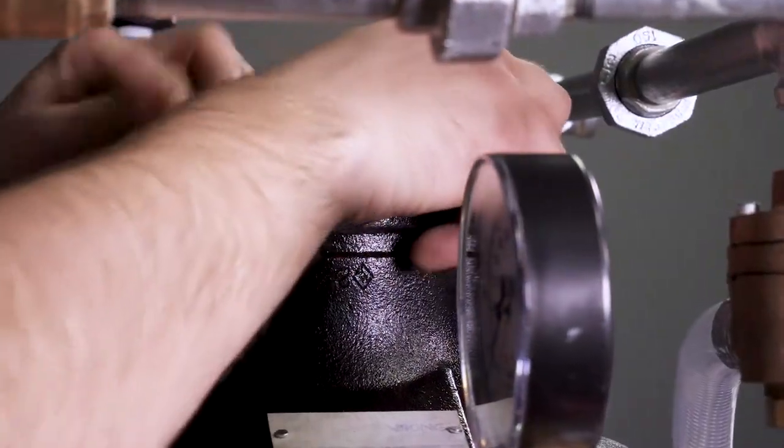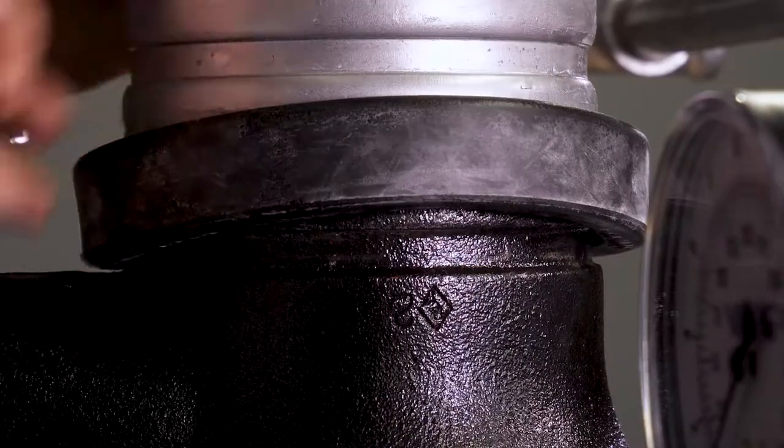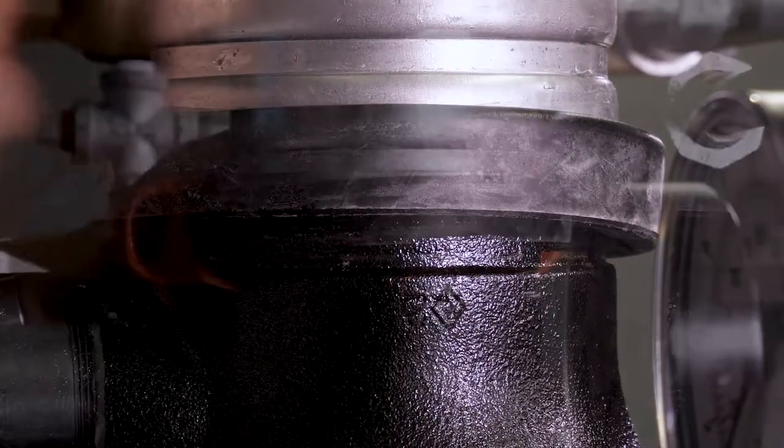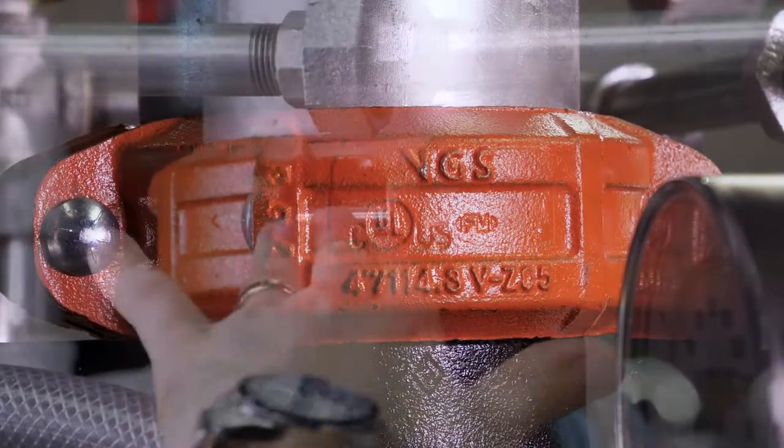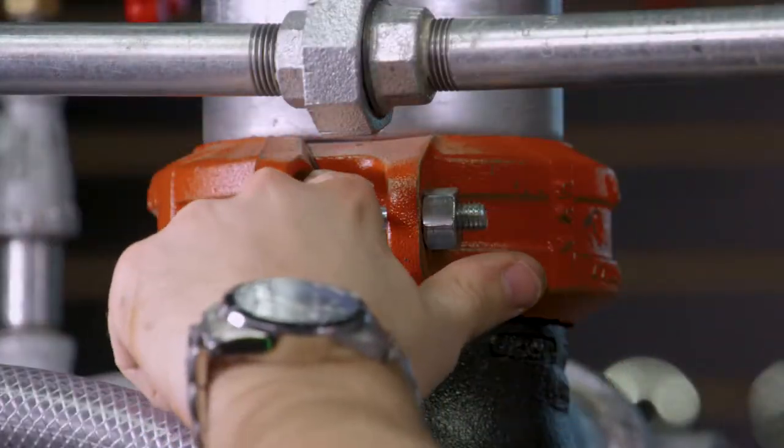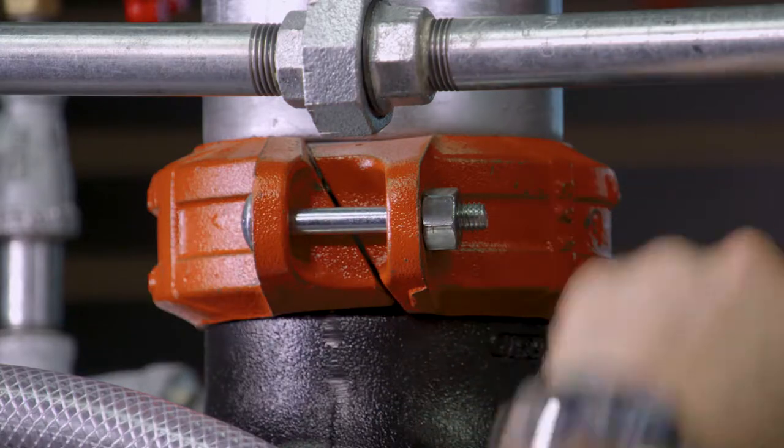We can now reinstall the couplings and the spool piece on top of the valve. Tighten the coupling until you have metal to metal contact on both sides of the coupling.